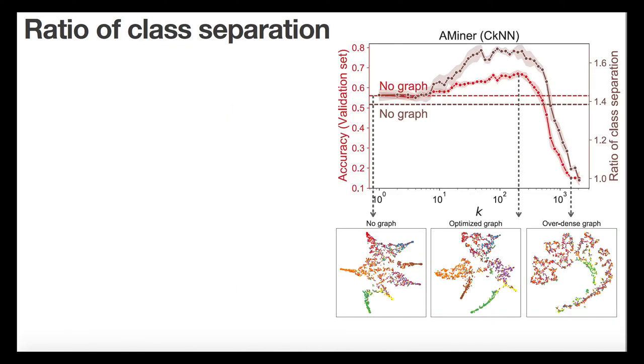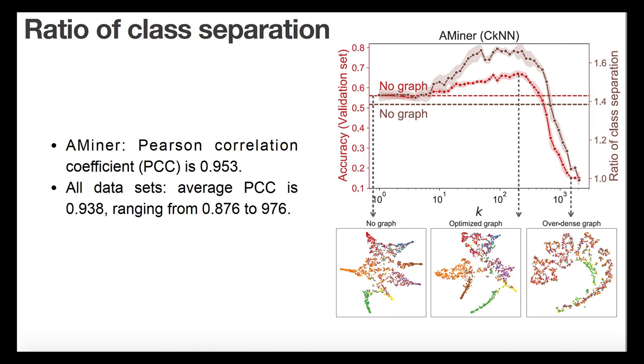Similar to alignment, here we observe a high correlation between RCS and the classification accuracy on the validation set. The Pearson correlation coefficient for AMiner is 0.953, and the overall average is 0.938 across datasets.